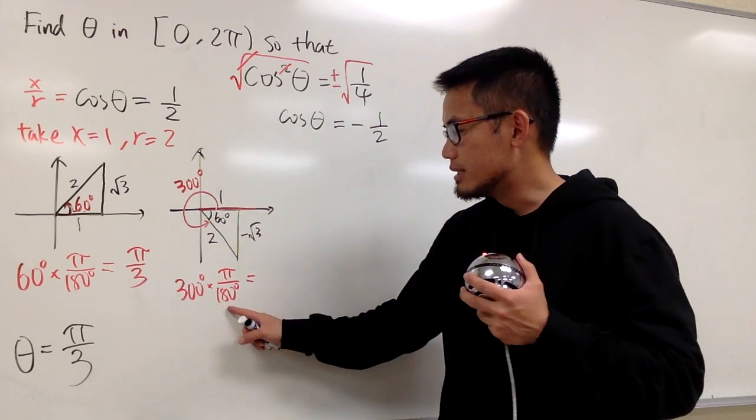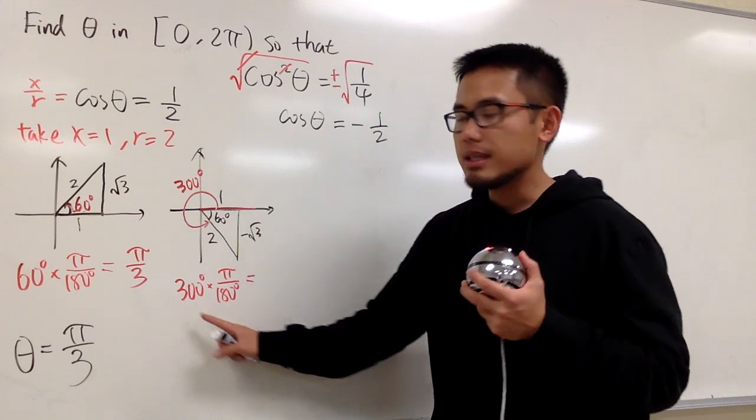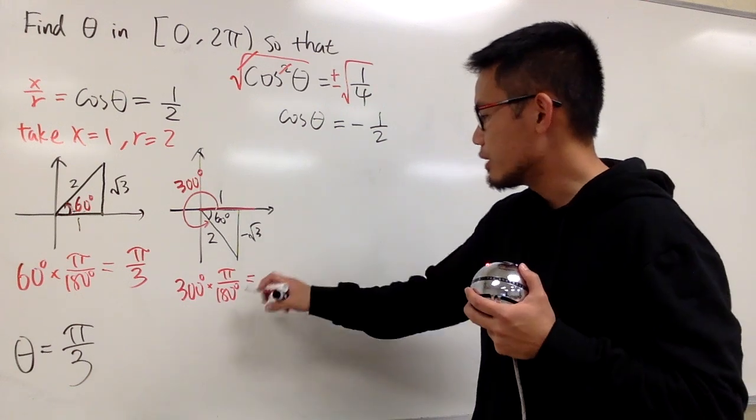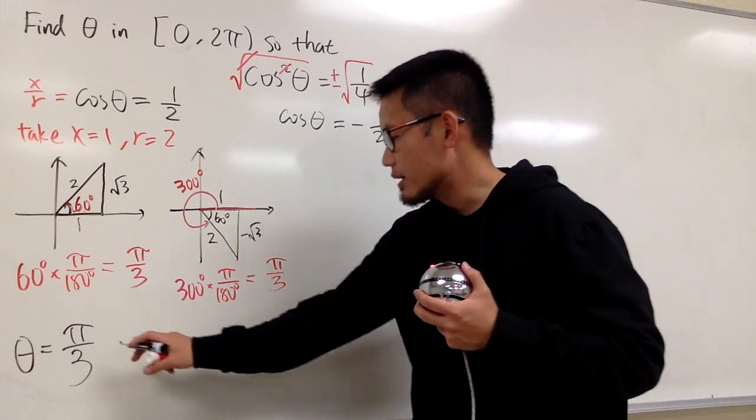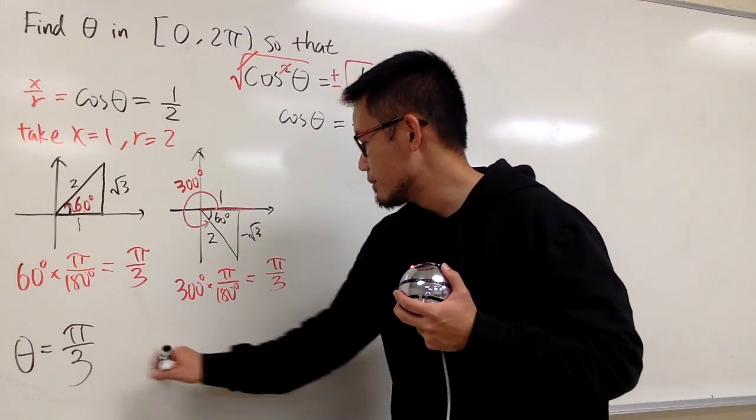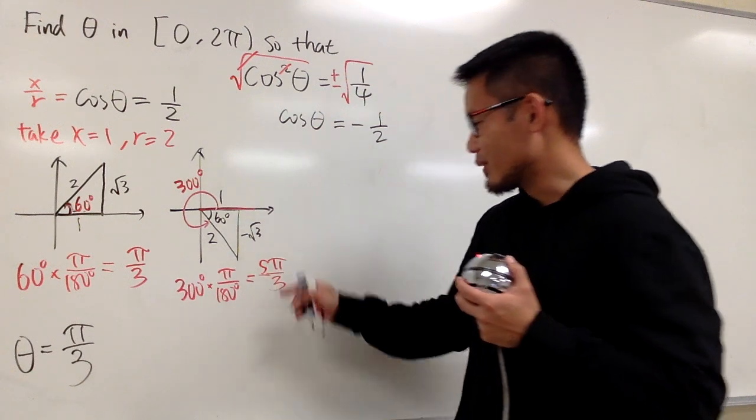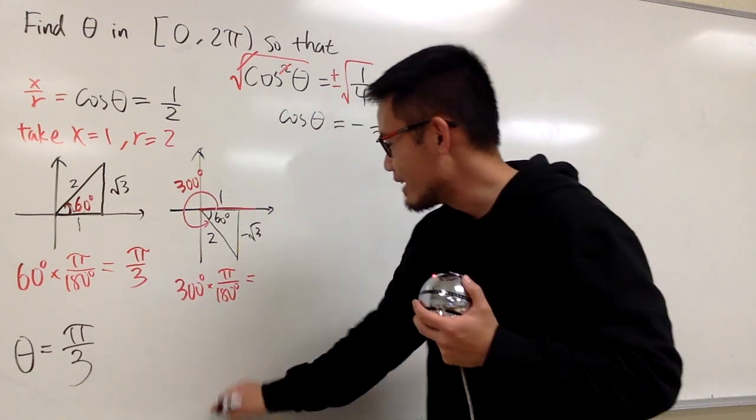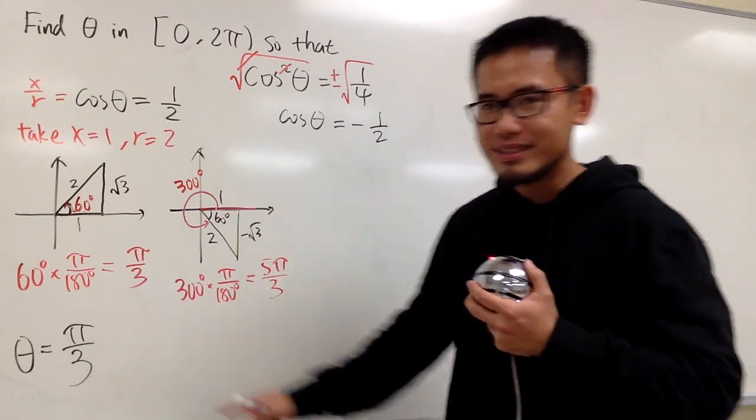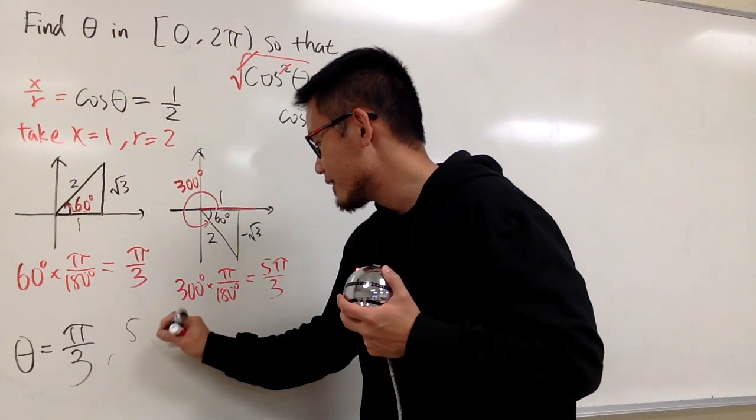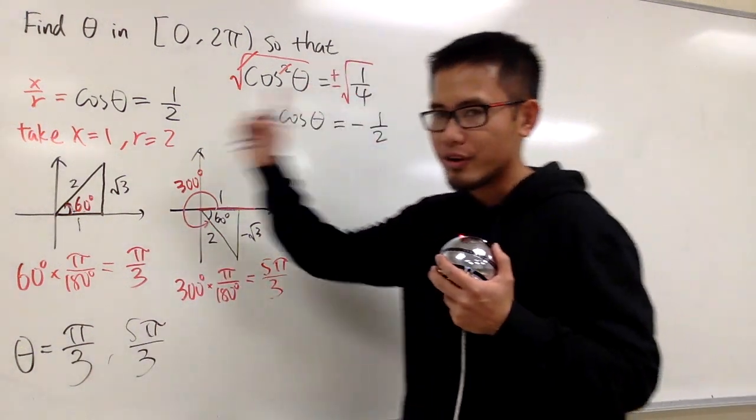300 degrees times π over 180 degrees. And you can reduce this and that by 60. 60 goes into 300 five times, and 60 goes into 180 three times. Altogether, you end up with 5π over 3. Second answer, 5π over 3. So you see, we got two answers from here.